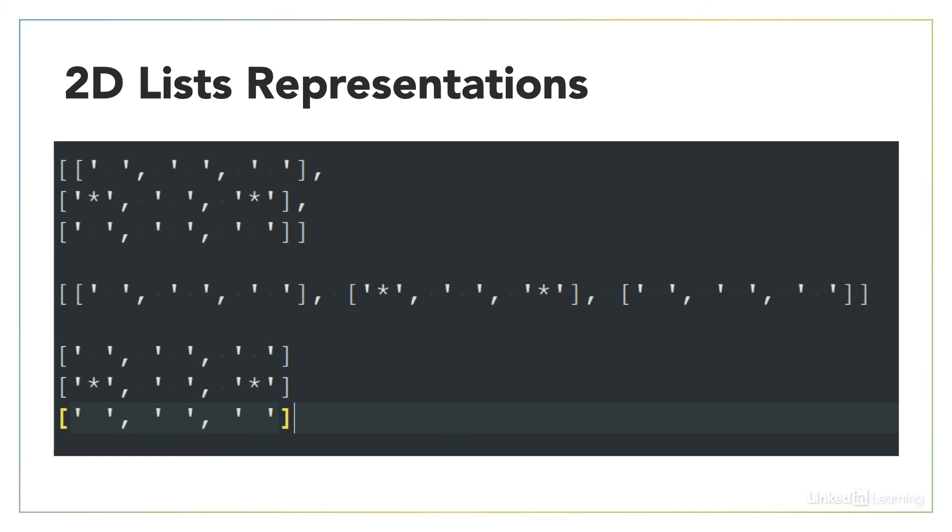So just to reiterate, the first representation there is how you might type it into Python, and how you might think about it in terms of rows. The second one is more like how it's represented inside of the computer. And the third one is just each of the individual rows printed out.